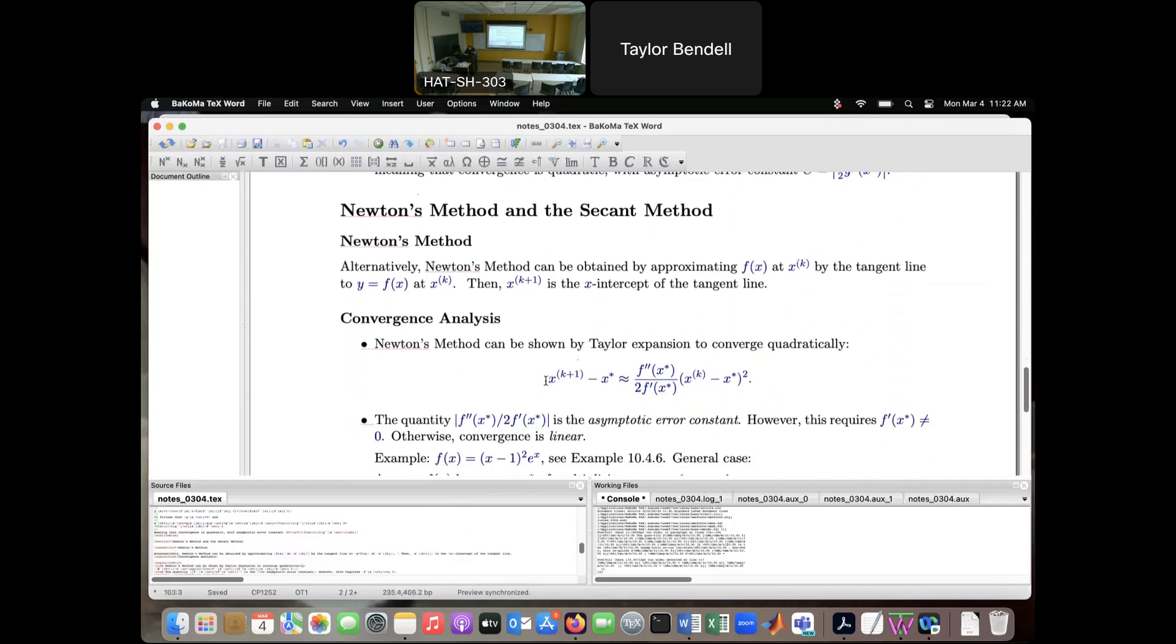Now, if I analyze the convergence of Newton's method directly from Taylor expansion of f, then I get this result that the new error is roughly this scaling factor, f double prime over 2f prime, times the previous error squared. So again, quadratic convergence. So this factor right here is equivalent to the one half g double prime factor that I showed you earlier. So this is the asymptotic error constant.